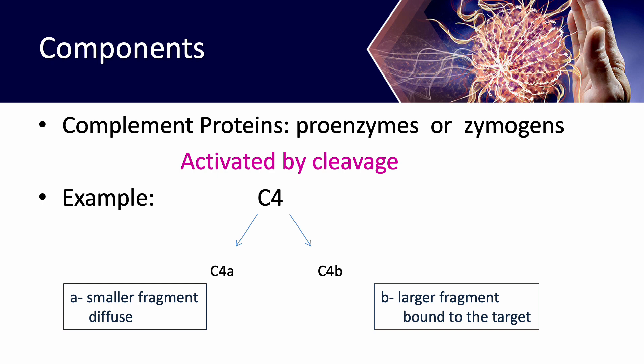As an example, the C4 component is hydrolyzed into two fragments: the smaller fragment is C4A and the larger fragment is C4B — this is an exceptional case. For C2, the larger fragment is C2A and the smaller fragment is C2B.